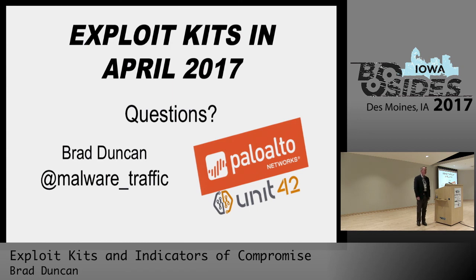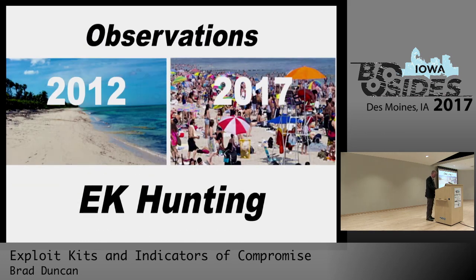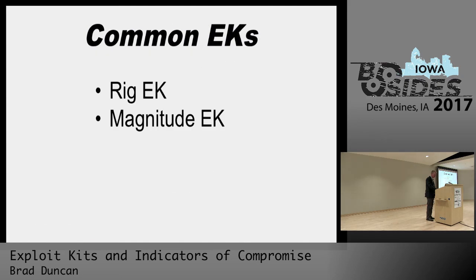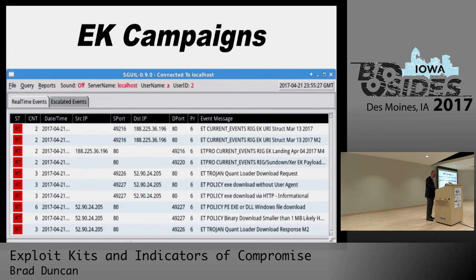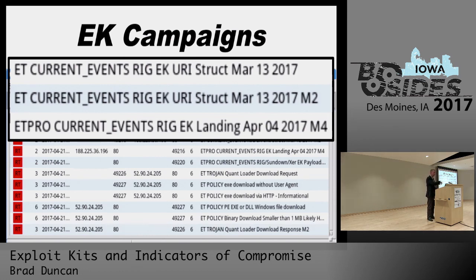Another question: in the past, exploit kits had common repeatable URL patterns — is that still the case where you can match with regex? Yes, but it also changes fairly constantly. The Emerging Threats ruleset generally keeps on top of that. Looking at the dates, a Rig exploit kit landing URL — April 4th was the last time they did a major change that required rewriting the PCRE for the rule detection, and the time before that was March 13th. So you can identify them, and a company like Proofpoint with the Emerging Threats ruleset does it that way — Palo Alto Networks has a different method.